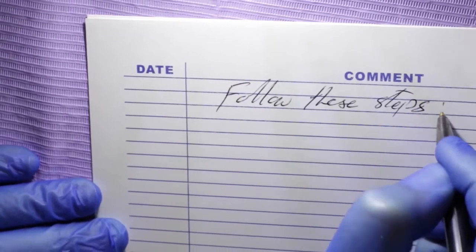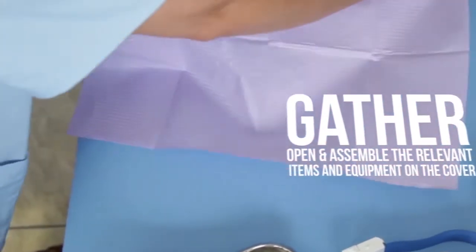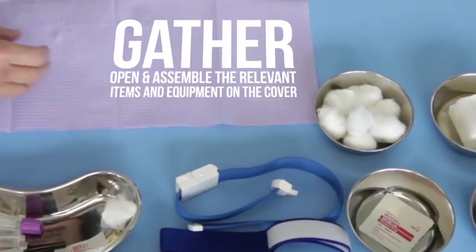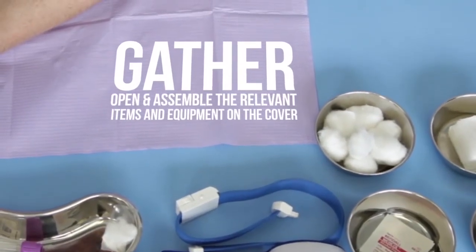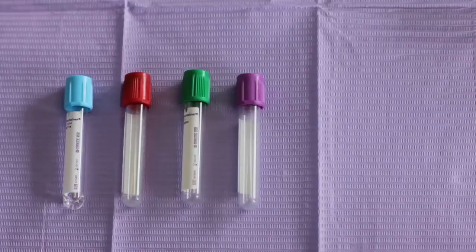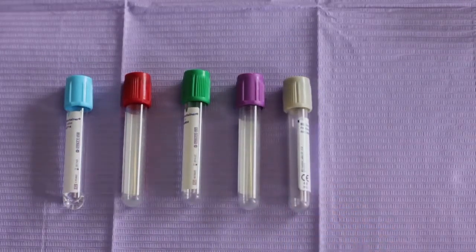Now follow these steps. Open a clean work surface cover, then gather, open, and assemble the relevant items and equipment on the cover. Set all of the tubes you need in the correct sequence for drawing the blood.